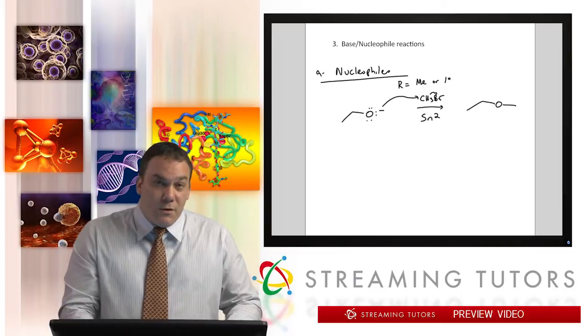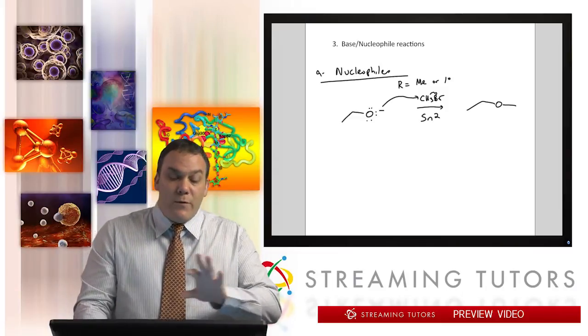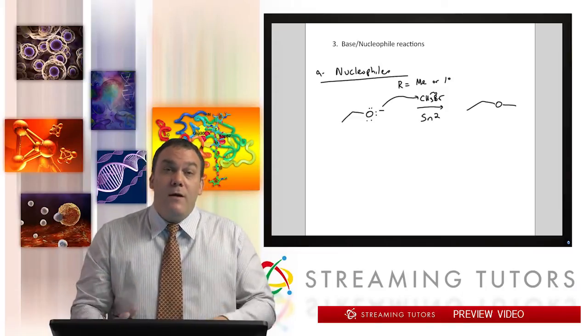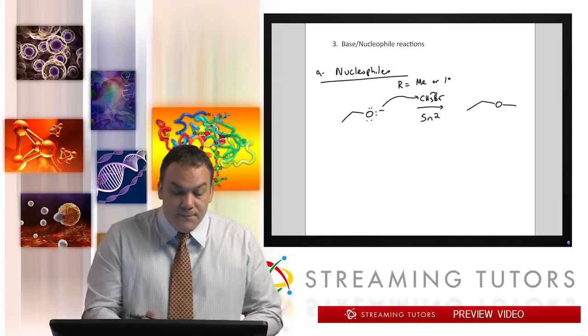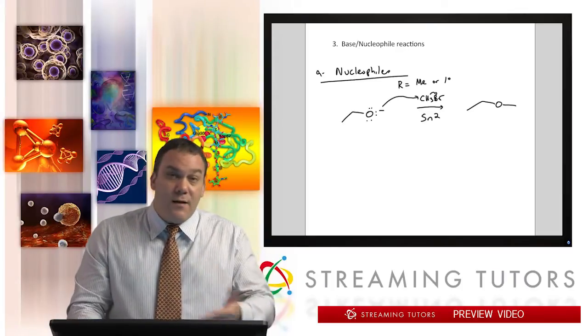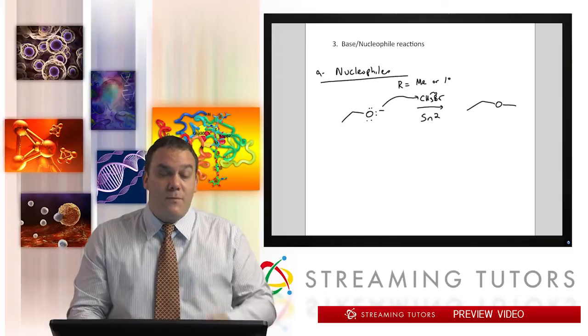Now if it was higher than primary, then it's probably not going to go through SN2. It's going to go through E2. That's why we kind of keep it at methyl primary for the alcohol halide side. Now of course the halogen could be Br, Cl, I, F—any of the halogens that we've talked about all semester long.